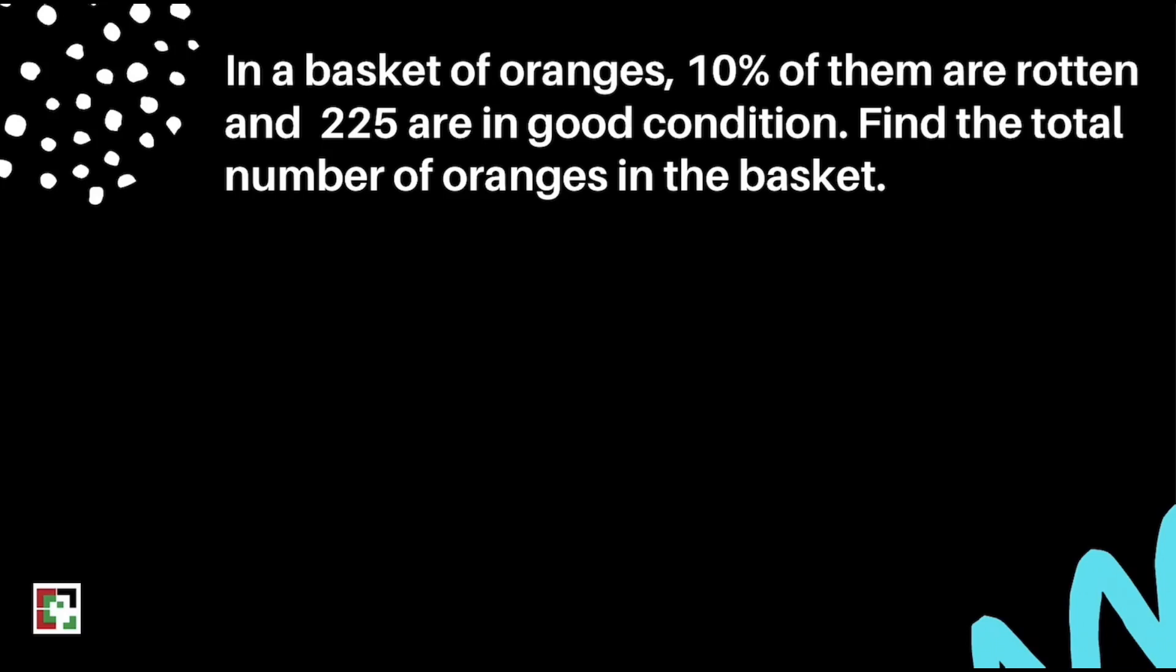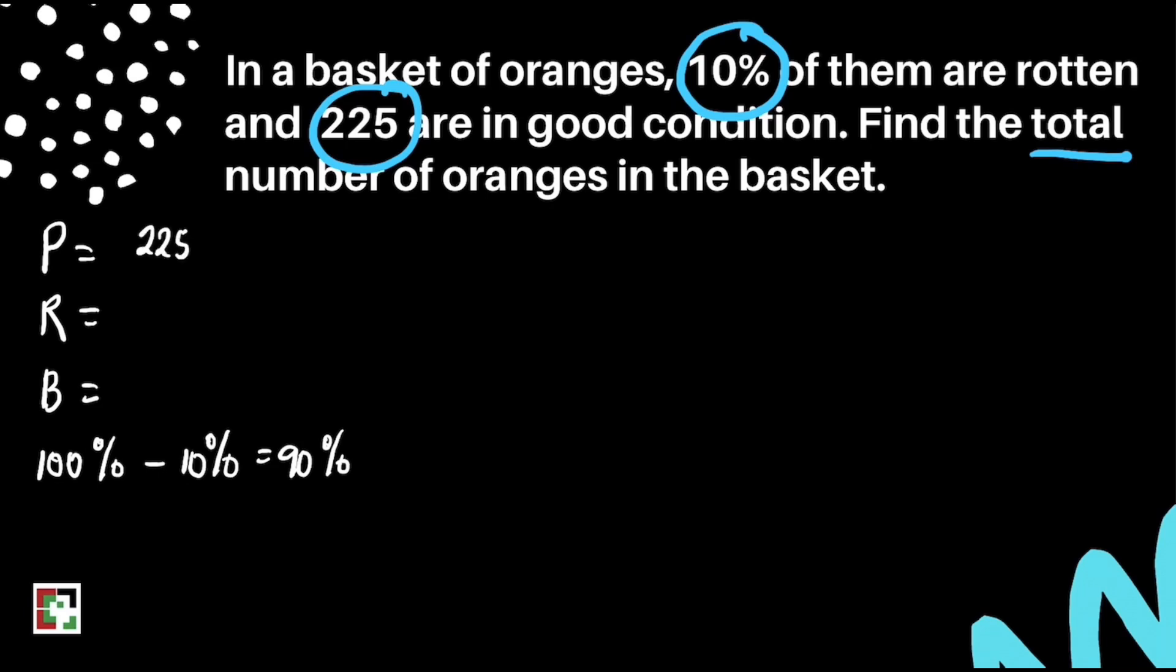We have the next question here. In the basket of oranges, 10% of them are rotten and 225 are in good condition. Find the total number of oranges in the basket. We have to identify our given. We have 10%, 225, and the total number of oranges. We have to subtract 100% by 10%, which equals 90%, because 225 is the 90% of the total number of oranges.